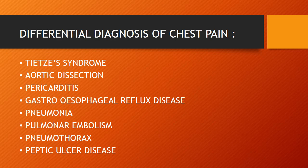Differential diagnoses of chest pain include: Tietze syndrome (costochondritis) — there will be chest wall tenderness on palpation. Aortic dissection presents with tearing chest pain radiating to the back and unequal blood pressure between the arms. Pericarditis — chest pain aggravates with lying flat and improves when sitting up or leaning forward. Gastroesophageal reflux disease — burning chest pain, bad taste in the mouth, and possible cough and hoarseness due to reflux.